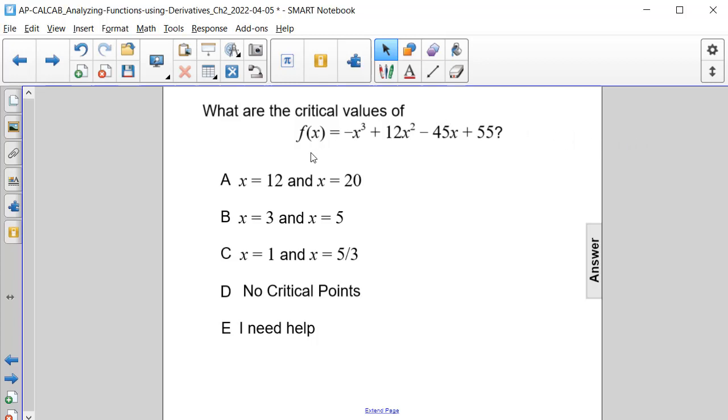What are the critical values of f(x), which is equal to negative x to the third plus 12x to the second minus 45x plus 55?